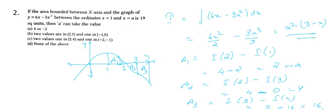Since the total area given is 19, and A3 = 16 lies in the region [3, 4], the value of a must be between 3 and 4. Checking the options, option C contains one value in the interval (3, 4). Since the curve is roughly symmetric, the left-hand side also yields a value between -2 and -1, which is also in option C. Therefore, our answer to question 2 is option C.